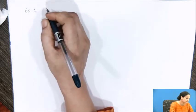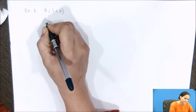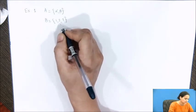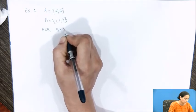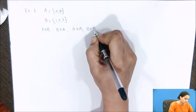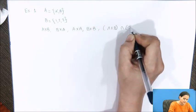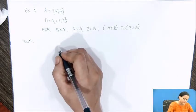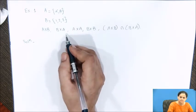The first example: if A = {α, β} and B = {1, 2, 3}, find A×B, B×A, A×A, B×B, and A×B ∩ B×A. Here is the solution. We will use the Cartesian product operation to solve each one of these. See the order.